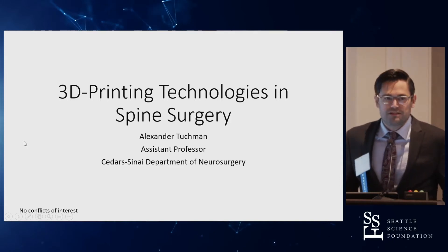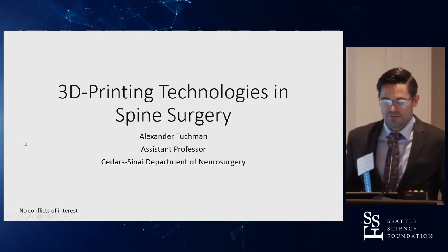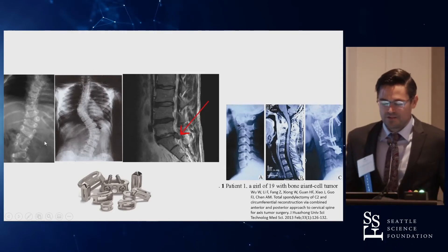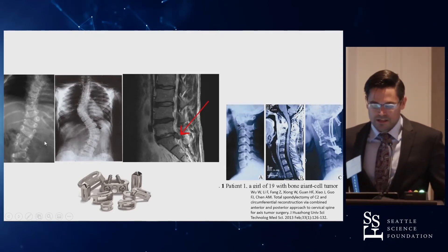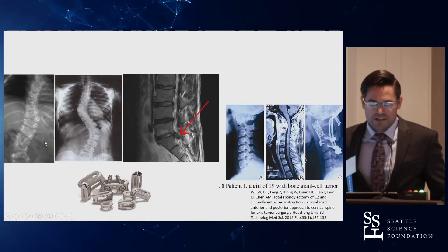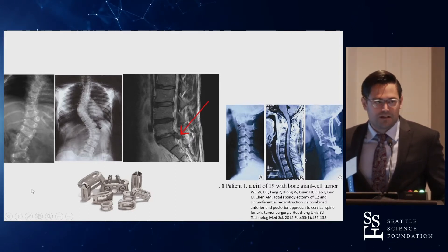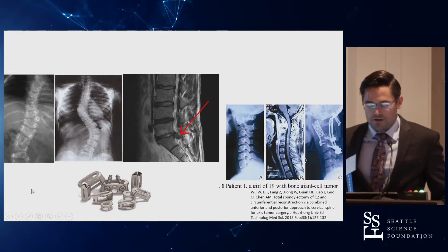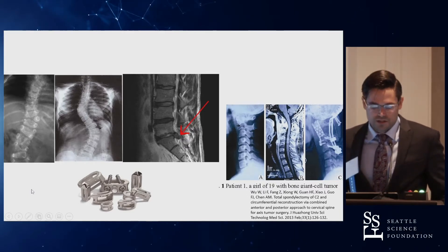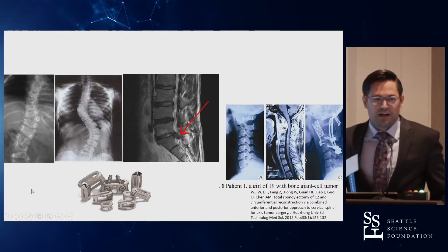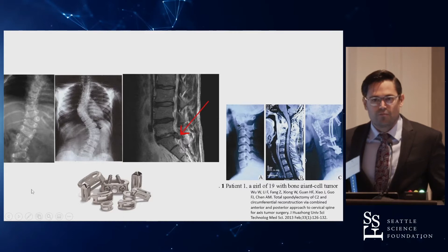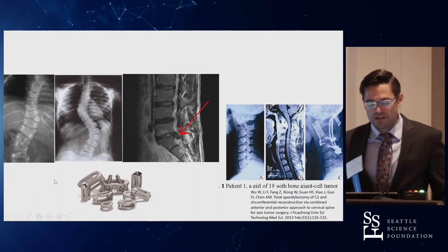I'm going to be discussing mostly 3D printing technologies and its use in spine surgery. The spine is a complex three-dimensional structure, and each patient is an individual, yet our preoperative planning is predominantly based on two-dimensional imaging. Beyond our preoperative planning, our implants for specific pathologies are very standardized, and often times we have difficult cases that really need something a little bit more customized than what's available off the shelf.